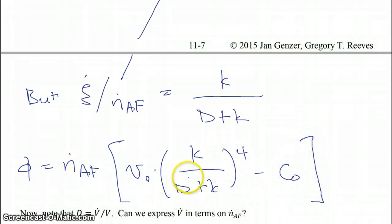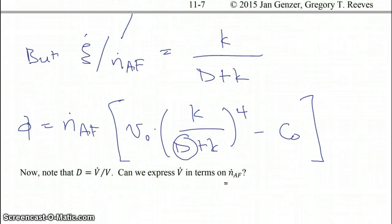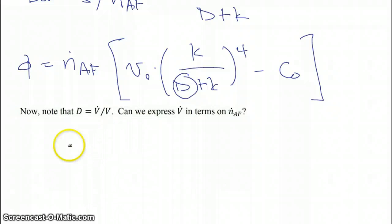This is important because we can express D in terms of N dot A feed, like so. So note that D equals V dot over V, V dot is equal to the molar flow rate of A coming in times its molecular weight divided by its density. Now we're going to go ahead and assume that the density doesn't change when A gets converted into B.